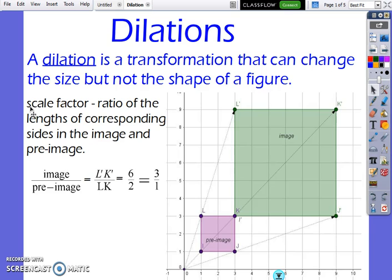So, let's find the scale factor here. Because we have nice horizontal and vertical sides, we can just count the coordinate units. Then, we can find the corresponding sides L' K' is 6 units and LK is 2 units. Simplify that for a scale factor, 3 over 1 or 3.